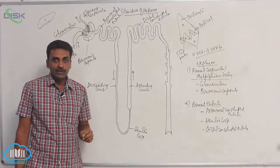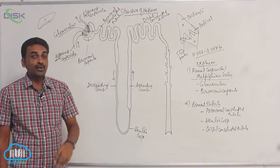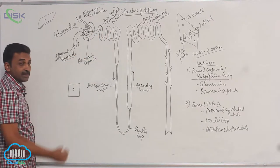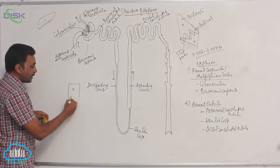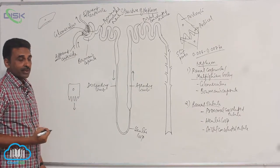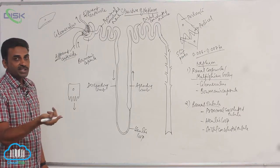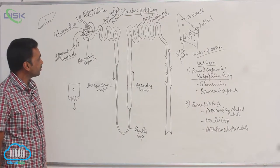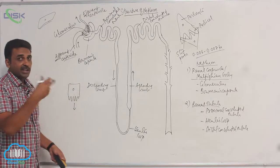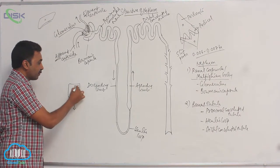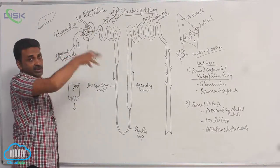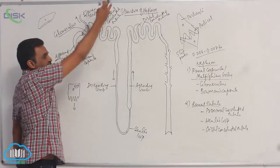The proximal convoluted tubules contain simple cuboidal epithelium. On the apical side — the side facing the lumen — there are microvilli, giving it a brush border. This indicates a lot of reabsorption occurs here. The cells also contain many mitochondria, further indicating active reabsorption in the proximal convoluted tubule.